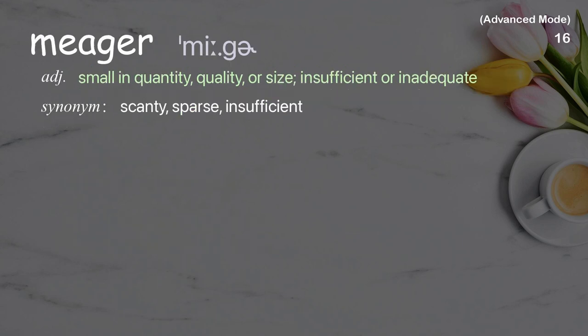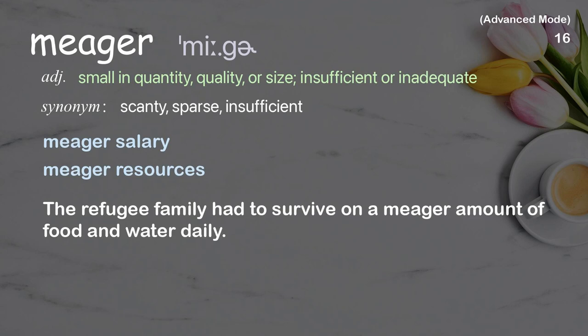Meager: Small in quantity, quality, or size; insufficient or inadequate. Examples: meager salary, meager resources. The refugee family had to survive on a meager amount of food and water daily.